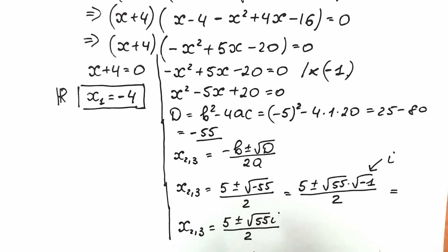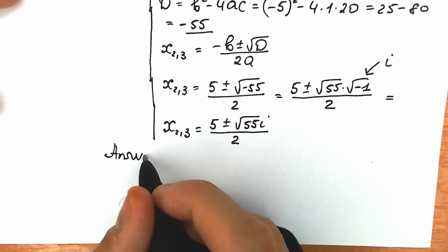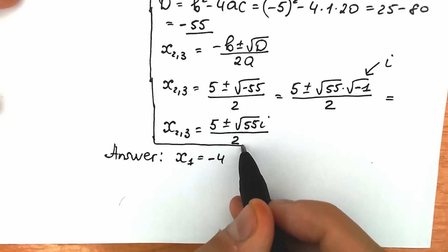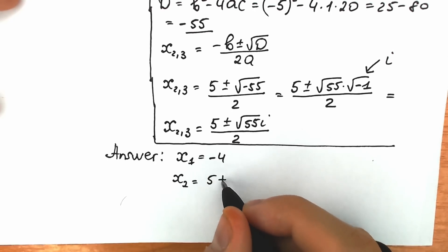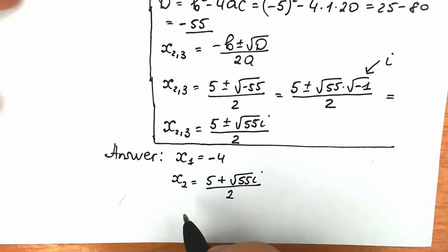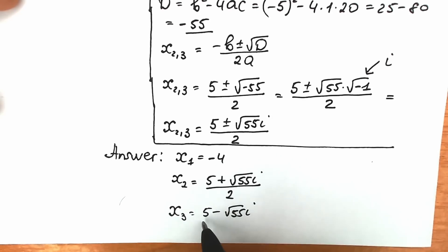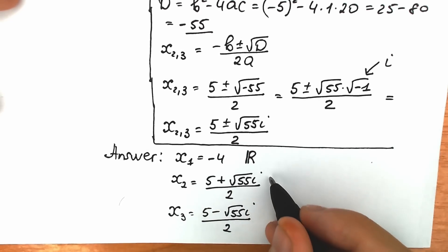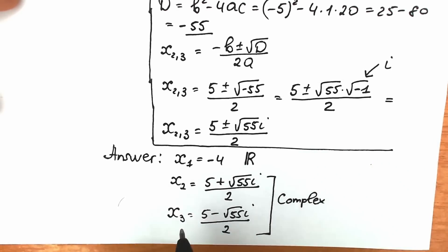Let's write our final answer. x₁ equals minus 4. x₂ equals (5 plus √55 · i) / 2. x₃ equals (5 minus √55 · i) / 2. The first root is a real number root, and the second and third are complex roots. So we have one real root and two complex roots.